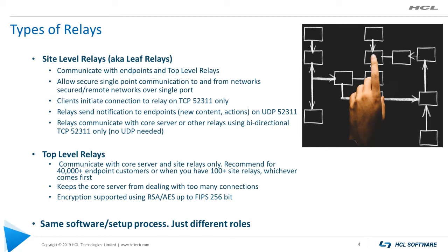For larger organizations, if you have a large number of site relays — like 100 or more — you could be hammering that core server with a lot of site relay communication. For larger organizations, usually those with around 40,000 endpoints or more, or 100 site relays (whichever comes first), we have another role a relay can fill: the top-end relay. A top-end relay's sole role is to take all the communications from the site relays in your environment and pass them up to the core.